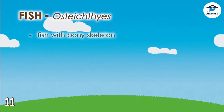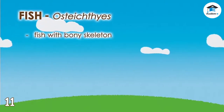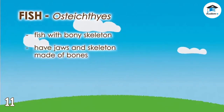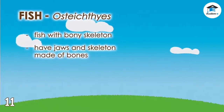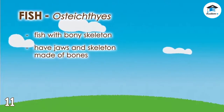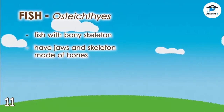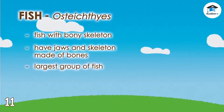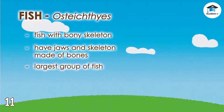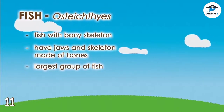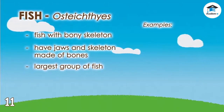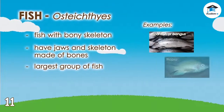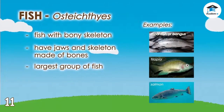Osteichthyes, or fish with bony skeleton: unlike the first two groups, they have jaws and skeleton made of bones. They are the largest group of fish, where most of the fish you know belong. This group includes milkfish or bangus, tilapia, and salmon.